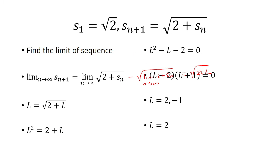Squaring both sides and rearranging, we bring everything to the left and factor to get (L minus 2)(L plus 1) equals 0. Setting each factor to zero gives L equals 2 or L equals negative 1. But since we're taking square roots and adding positive numbers, the limit must be positive. Therefore, the limit is 2.